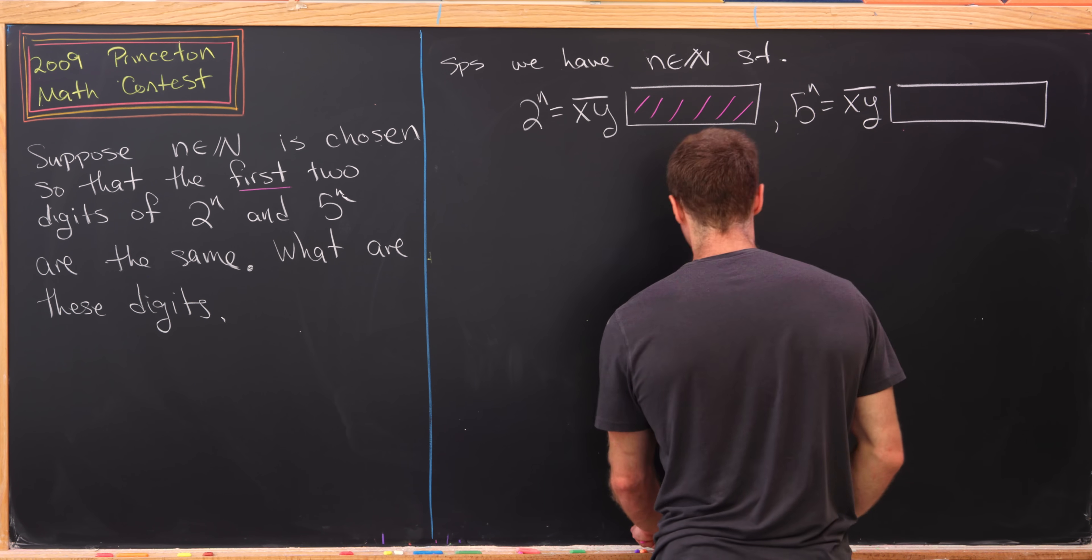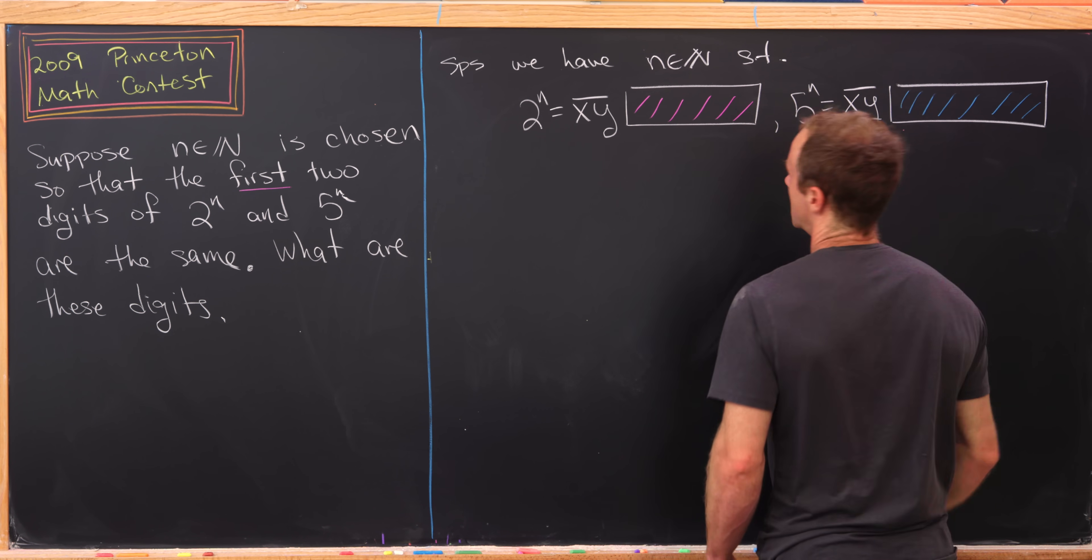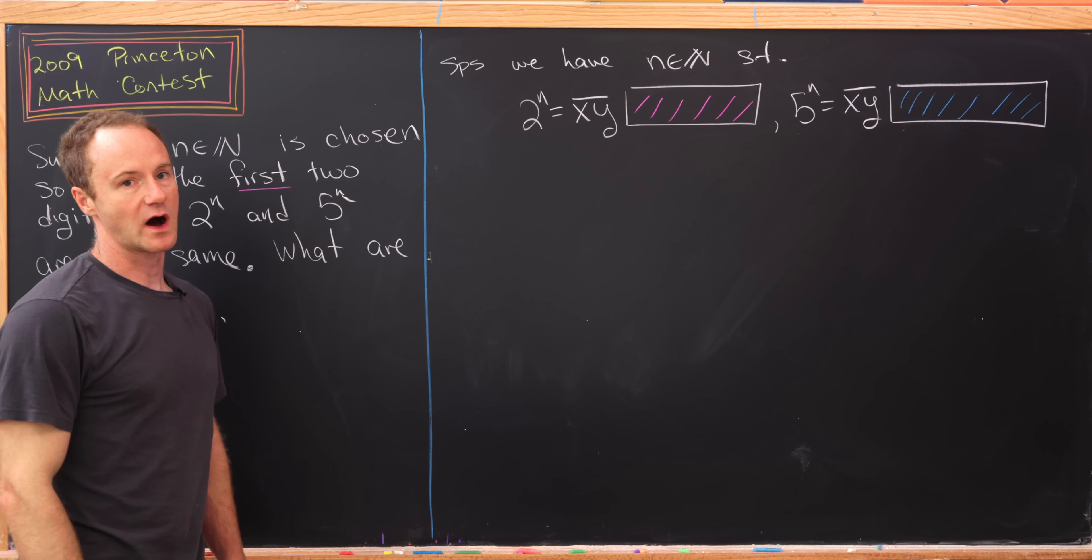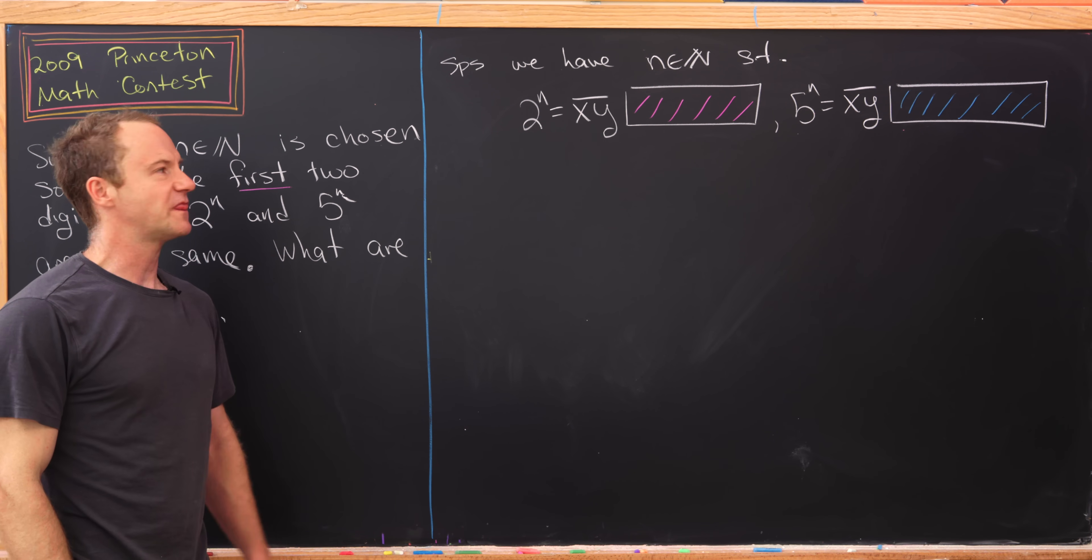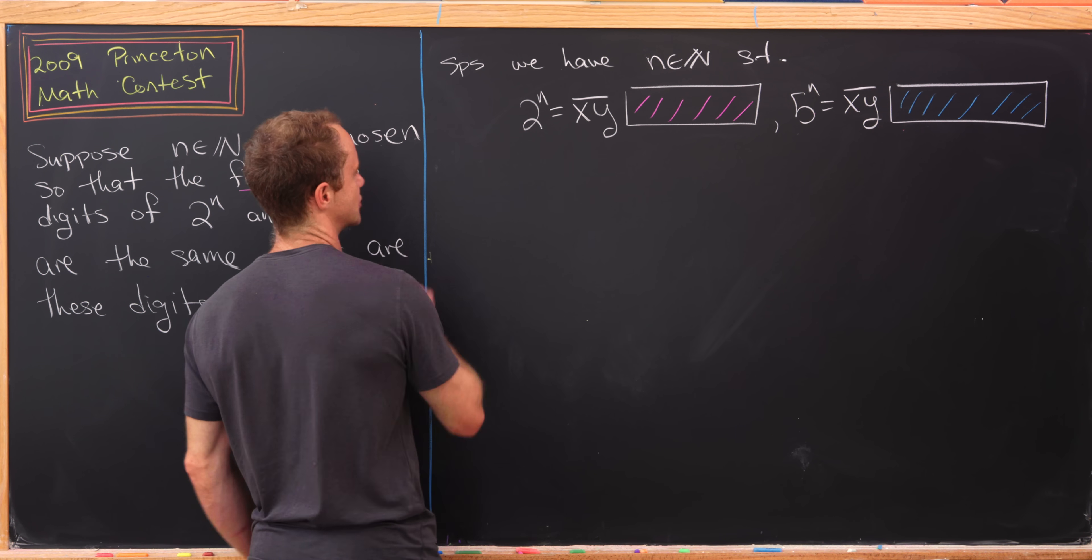Then 5^n starts with the two digits x, y and then ends in a bunch of stuff as well. Of course that stuff that these end in will not be the same. We want to figure out what x and y are, or maybe what the two digit number xy is.